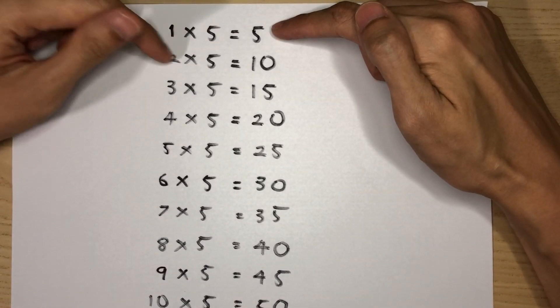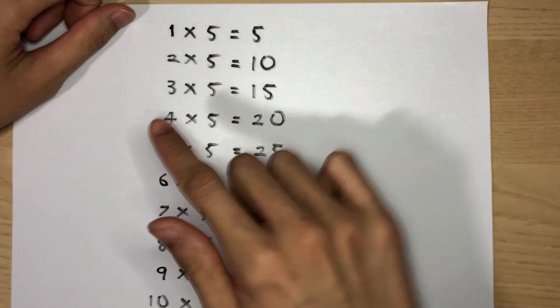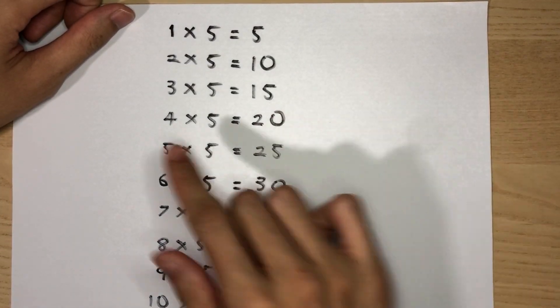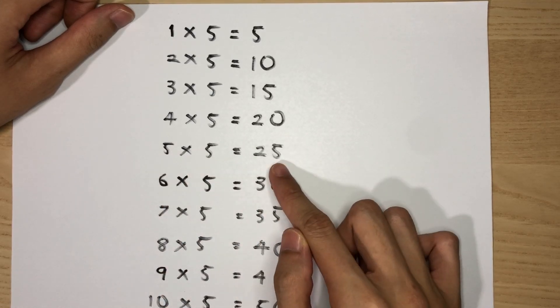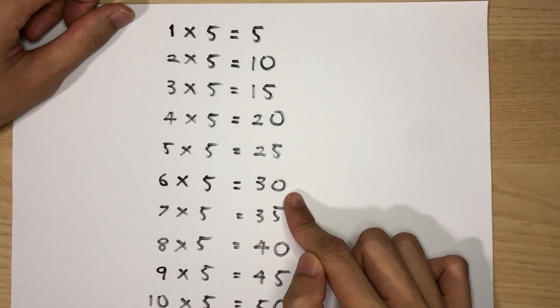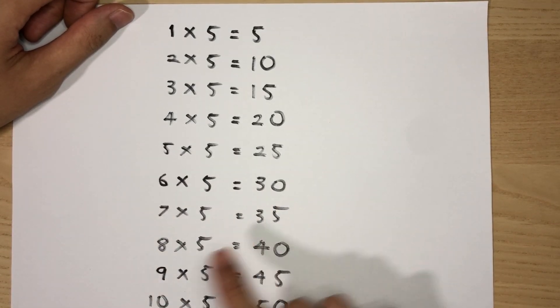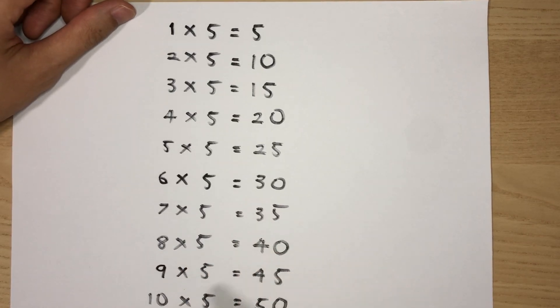1x5 is 5, 2x5 is 10, 3x5 is 15, 4x5 is 20, 5x5 is 25, 6x5 is 30, 7x5 is 35, 8x5 is 40, 9x5 is 45, and 10x5 is 50.